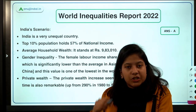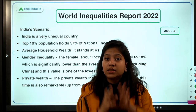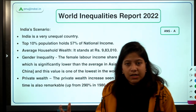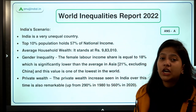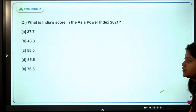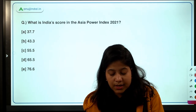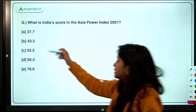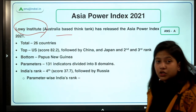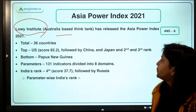The report also gives suggestions like progressive taxation of wealthy people and more equitable distribution of wealth by the state — though these are less important from a Phase 1 exam perspective. Moving to the next question: what is India's score in the Asia Power Index 2021? The right answer is 37.7.